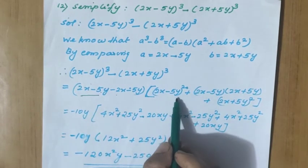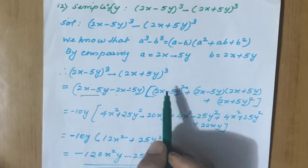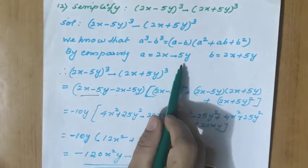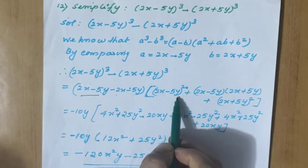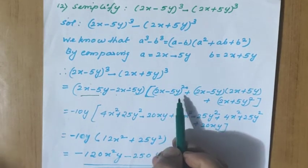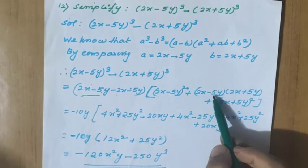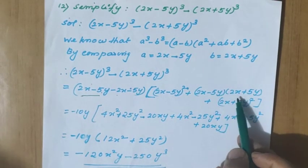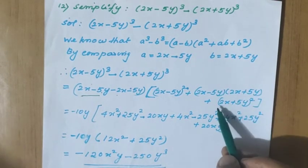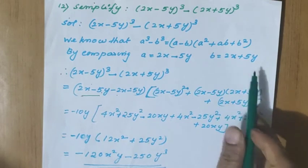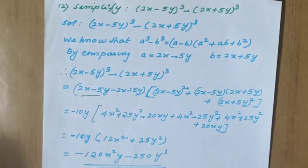Now what is the next bracket? It is a square. What is a? It is 2x minus 5y. So the next term is 2x minus 5y whole square. Plus ab: that is 2x minus 5y into 2x plus 5y. Next, b square is 2x plus 5y whole square.